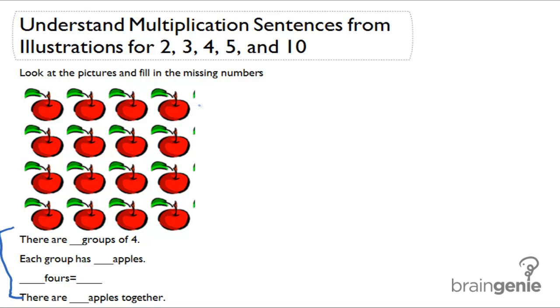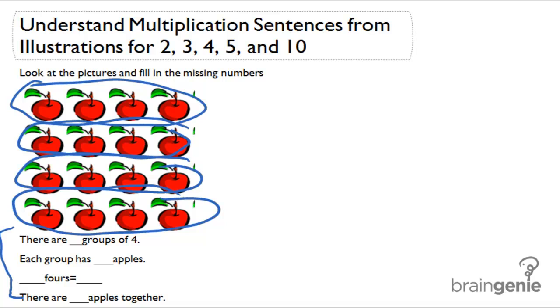So 1, 2, 3, 4. Great. 1, 2, 3, 4, that's a group. 1, 2, 3, 4, that's another group. And 1, 2, 3, 4, that's another group. So there are how many groups of 4? 1, 2, 3, 4. Four groups of 4. That's great.